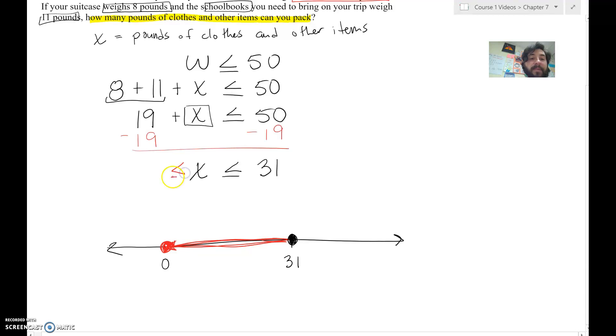So there really should be another boundary point here, and that is that you can't bring less than nothing. You can't bring negative pounds of clothes. So this would be my solution there. You're probably only needing this one right here, that you can bring less than 31 pounds. But in reality, you can't bring negative 10 pounds of clothes. So there is actually this double constraint here. And this is where X can be. It can be anywhere from 0 to 31 pounds.